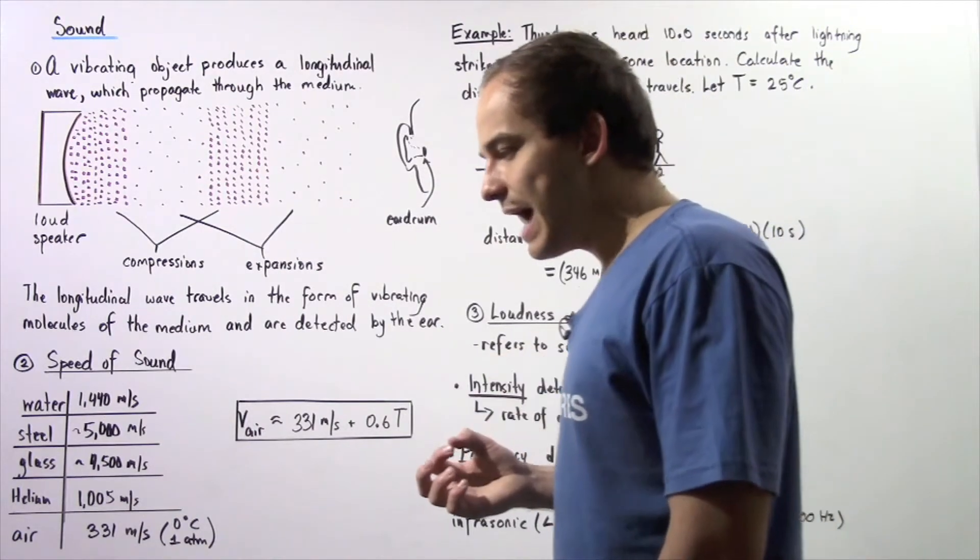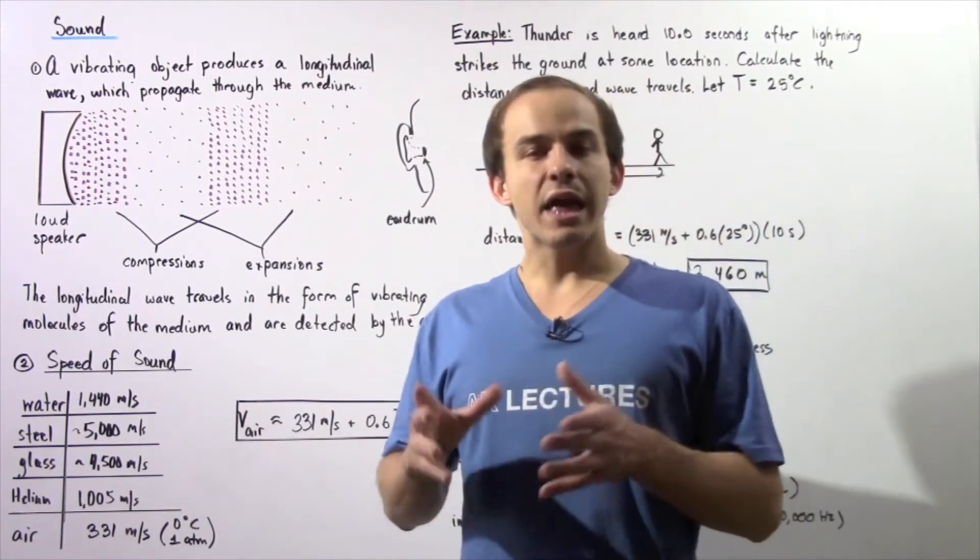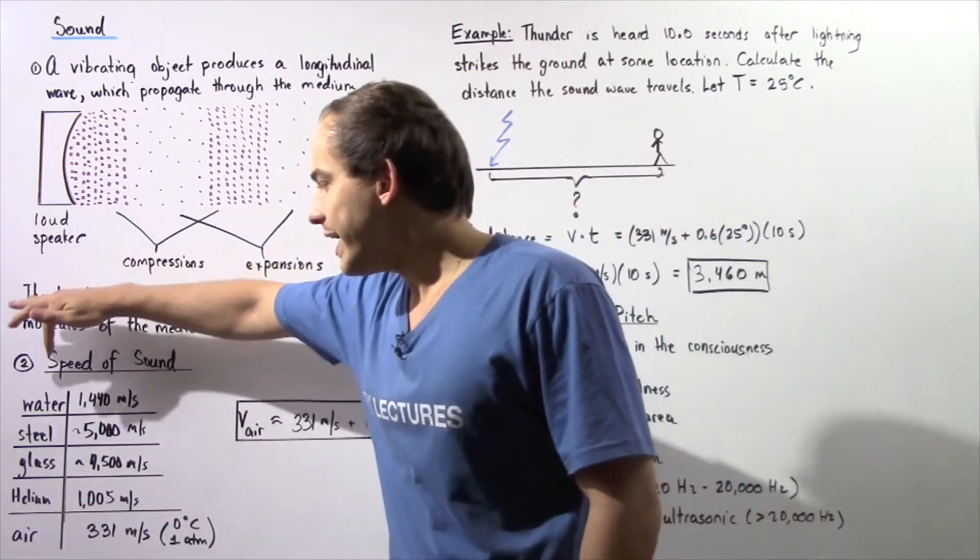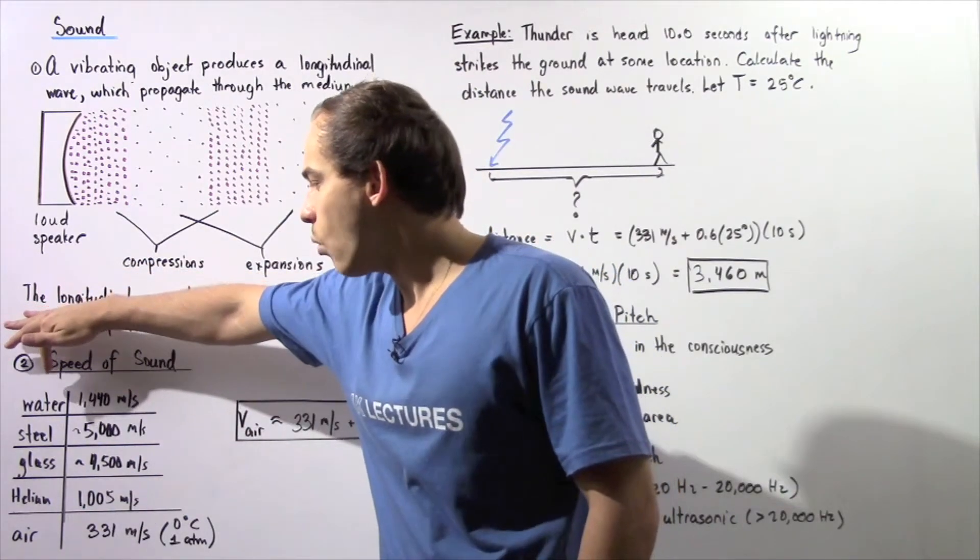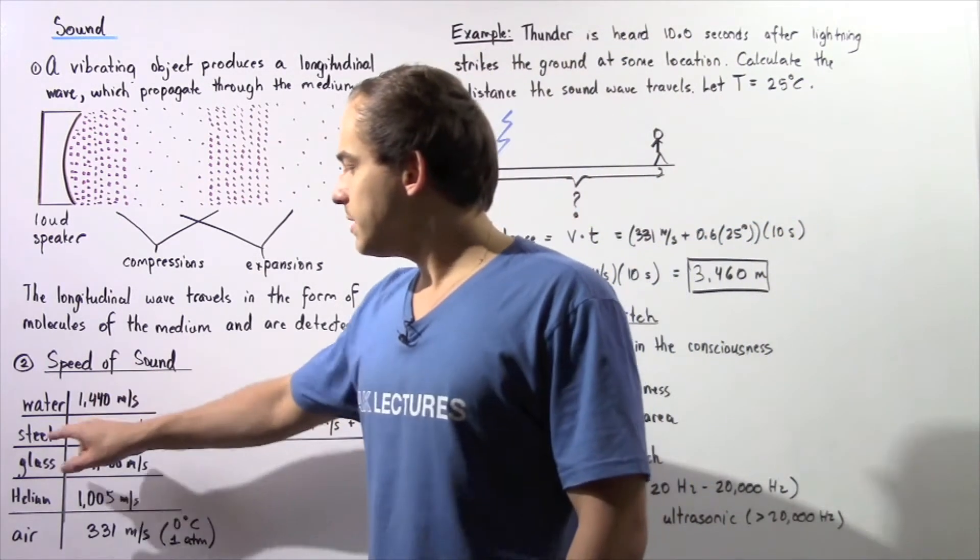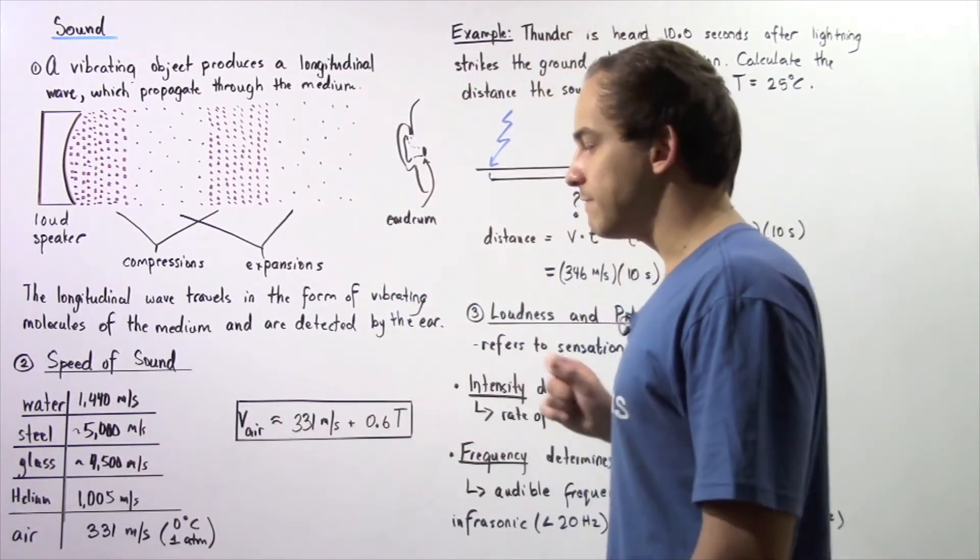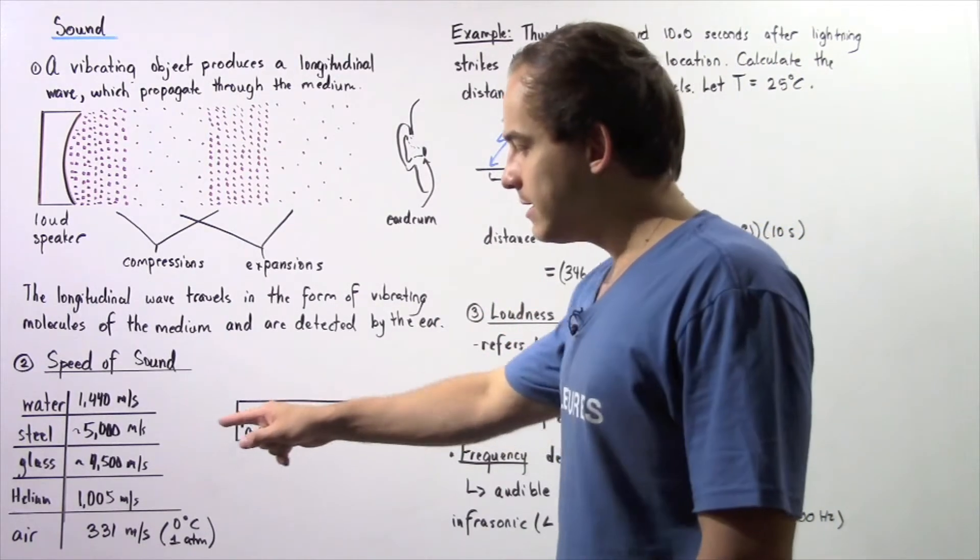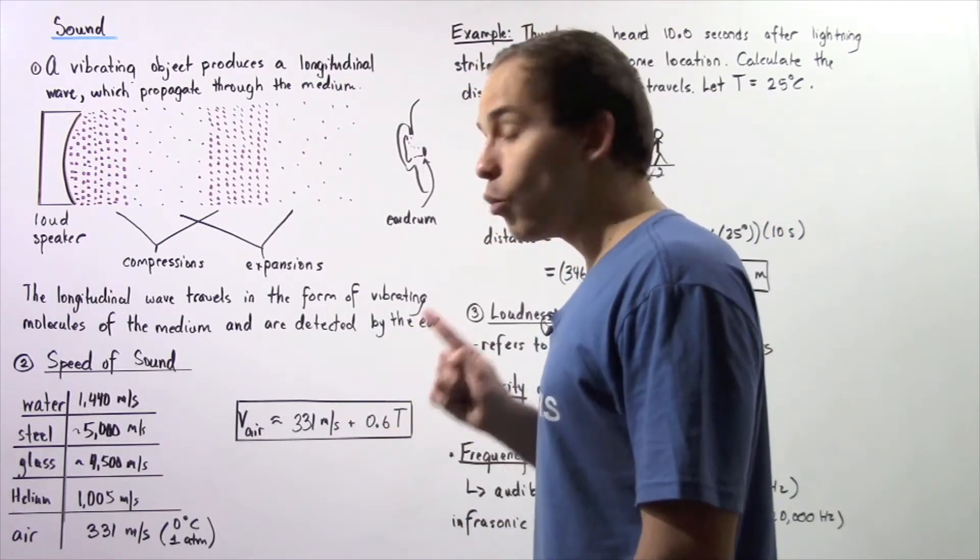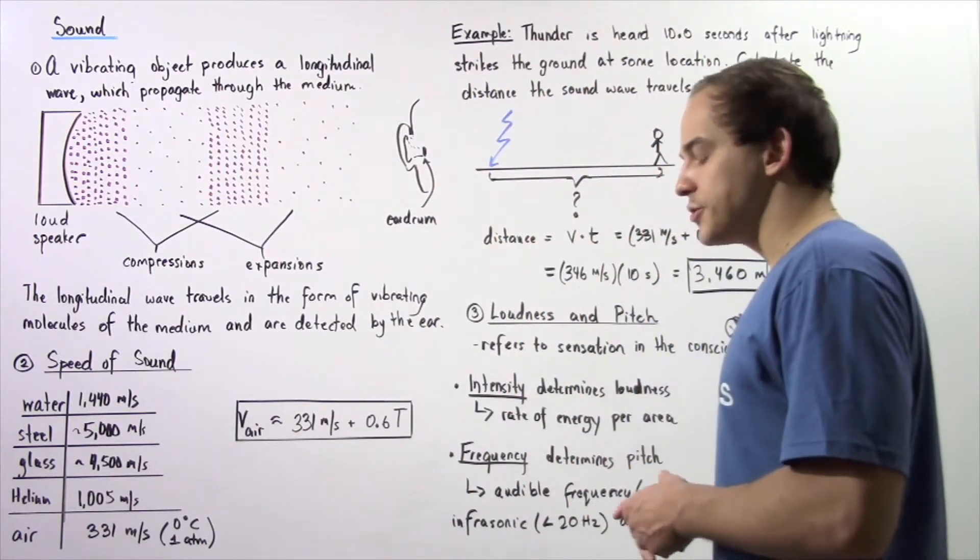The speed of sound is different in different mediums and depends on the type of medium we're using. The speed of sound in water is about 1440 meters per second. In steel, 5000 meters per second. In glass, 4500 meters per second. In helium, 1005 meters per second. And finally, the speed of sound in air under one atmospheric pressure and at zero Celsius is 331 meters per second.